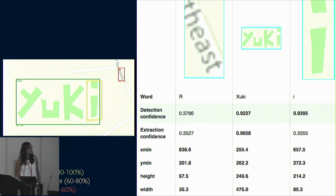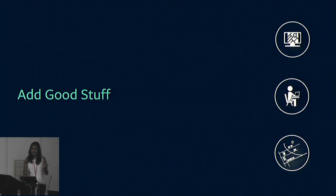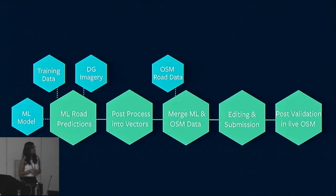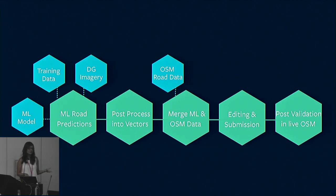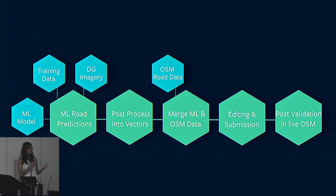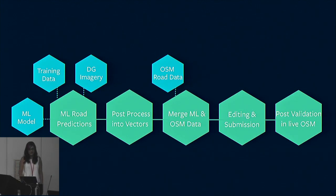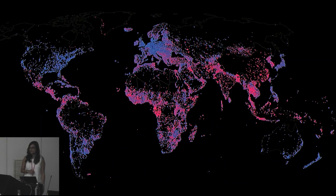That was pretty much it on the vandalism stuff. Now for the adding good stuff — the machine learning roads that finally get into OSM. We have our ML data model, and we add training data which we create ourselves, coupled with the DigitalGlobe imagery, which is pretty much the same one that's in OSM and available to everyone. We do our road predictions and eventually get some vectors — a raster map that we turn into vectors so that we can merge it much better because it's now the same file format as OSM. Then our editing team goes through pretty much every one of those tasks and it finally gets into OSM. This is what road coverage looks like in OSM — more developed countries obviously have a lot more road coverage, but once you get into more developing nations, it starts to get less and less.